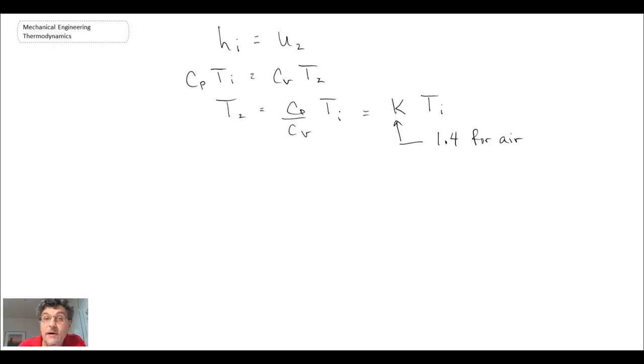Ti here needs to be in Kelvin. With that, we can say that the temperature at the end of our process at state 2 is 406 Kelvin. That solves the problem. That is also approximately 133 degrees Celsius.